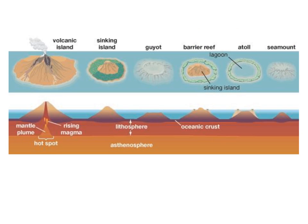Let's talk about some intraplate underwater geology. We talked before about a hot spot — an area where a magma plume rises to the surface and can form a volcano in the middle of a plate. The Hawaiian Islands are a great example, where a hot spot forces magma up to create volcanic activity. An underwater volcano can eventually break the surface of the ocean and become a volcanic island.